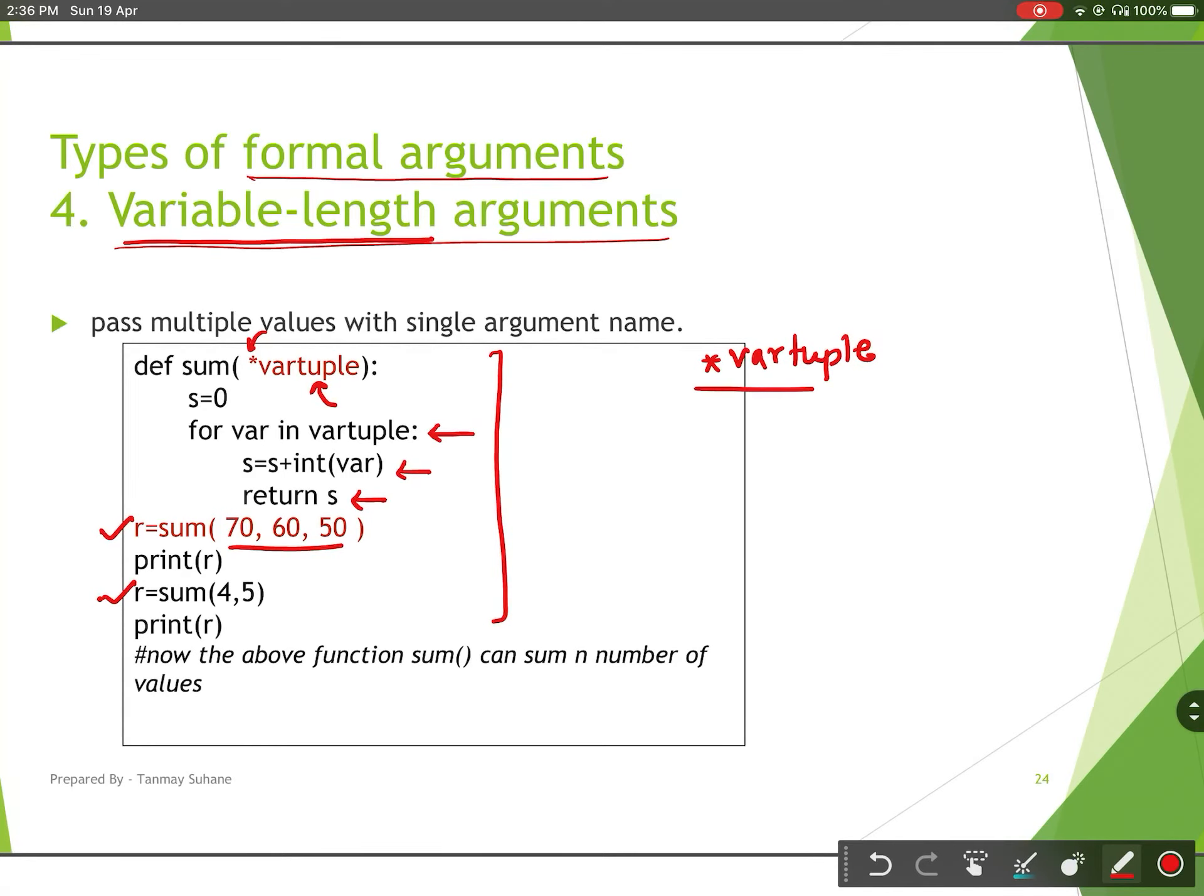I hope it is clear to you how to receive a variable length argument in a function and how to perform operations on it. Thank you.